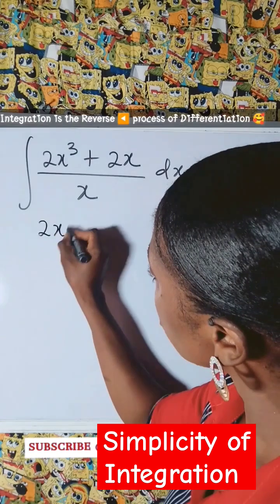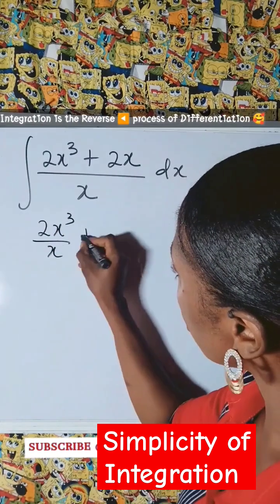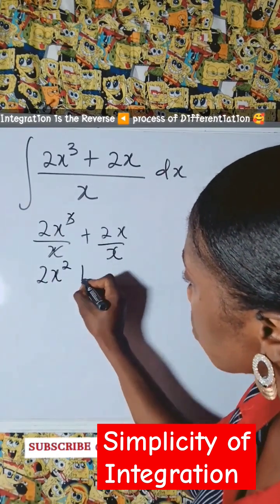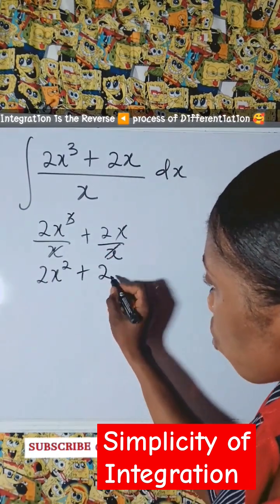In that case, we are going to have 2x³ over x plus 2x over x. This will cancel to give us 2x² plus this will cancel to give us 2.